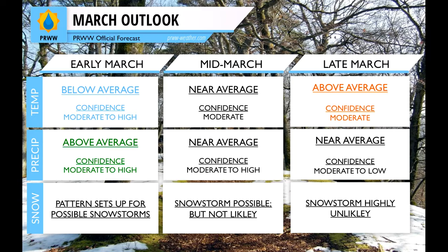Late March, we're likely going to see above-average temperatures with near-average precipitation, and snowstorms are becoming very unlikely at this point. The negative NAO is almost completely gone, and we're going to see above-average temperatures — probably reaching into the 40s at some point in late March. The way the pattern is setting up for this March, I don't think we're going to be seeing snowstorms in the later part of the month. So that's your forecast for March 2016 from PRWW. I'm PRWW Meteorologist Connor Kozen — have a great day!